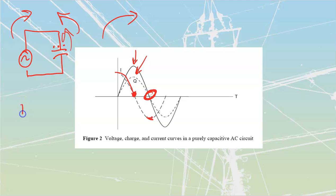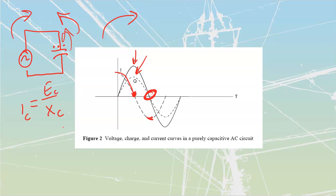We use the formula that IC equals EC divided by XC - that's straight up Ohm's law adapted for capacitance, where instead of resistance we use our reactance XC. When we have high amounts of capacitance, we have more electrons to move for a given voltage, so we have higher current - the same as having low reactance. And when frequency is high, we have to move lots of electrons quickly, which means lots of current, which is the same as having low reactance.